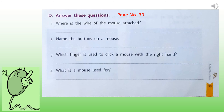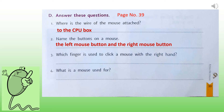Let us also do some questions from page number 39 of your book. The first question is: where is the wire of the mouse attached? The wire of a mouse is attached to the CPU box. The second question is: name the buttons on a mouse. The buttons on the mouse are the left button and the right button.